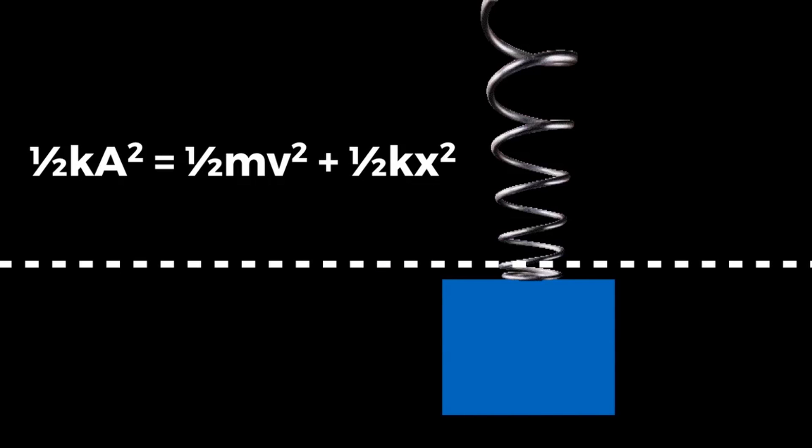It can be shown that E, the total energy of the system, is equal to one half k times A squared, where A is the amplitude of the simple harmonic oscillation. Therefore, the full equation becomes: one half kA squared equals one half mv squared plus one half kx squared. This formula is very useful for relating energy, mass, and velocity.